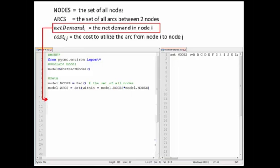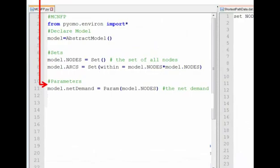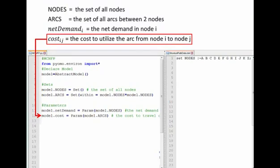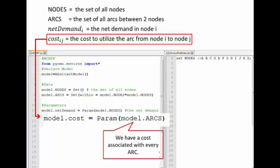And then we can specify our net demand, which is a parameter. And we have one of those net demands for each one of our nodes. And our cost parameter. Here, cost has two subscripts, i, j. But we can actually specify our cost parameter, not explicitly saying that it has two subscripts. And we do that by saying that we have a cost parameter. So we say model.cost is equal to a param. And this model.arc in the parentheses of our parameter call says that we have a cost for every one of our arcs. And we know previously that each of our arcs is going to be defined by a pair of nodes.